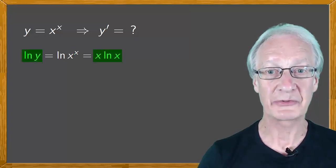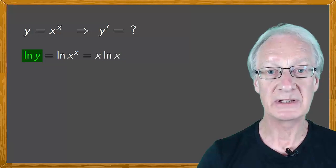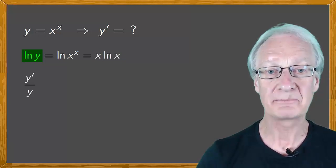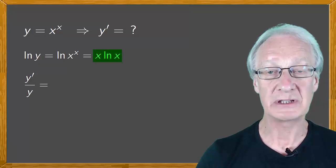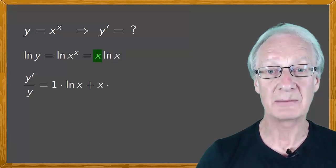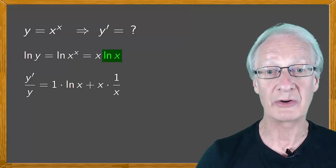Next, we'll differentiate both sides. The derivative of the natural log of y is y prime over y. And this equals the derivative of a product. The derivative of x is 1. And this is times the log of x. Plus x times the derivative of log x, which is 1 over x.